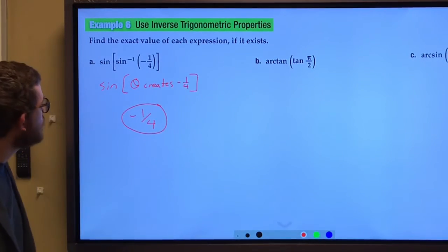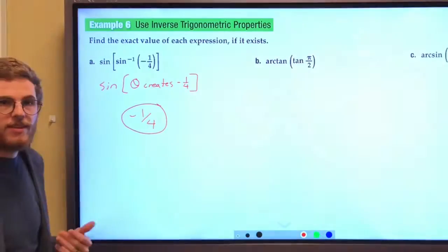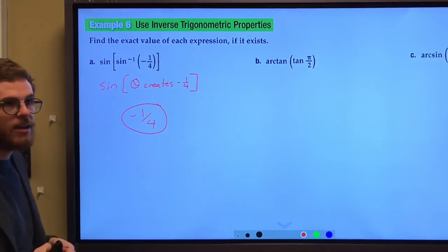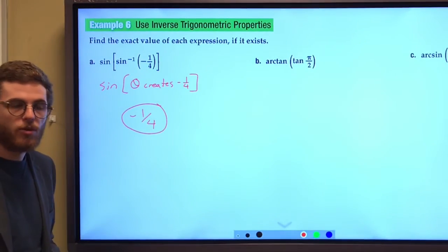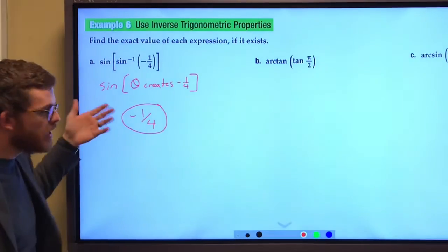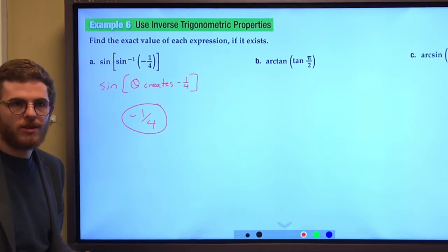To put it in simpler terms, the sine and the inverse sine undo each other. Because we are allowed to take the inverse sine of negative one-fourth, then all is good. They undo each other, we get out a negative one-fourth.